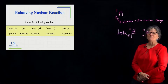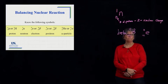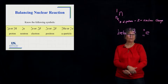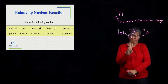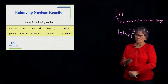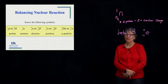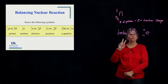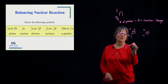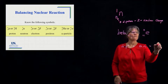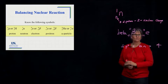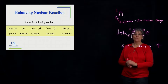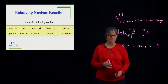The last particle we need to be familiar with is an alpha particle. An alpha particle is just a helium nucleus. Helium is element number two, so it has two protons — a nuclear charge of two. A helium nucleus also has two neutrons, so two protons plus two neutrons gives a mass number of four. It is equally correct to write an alpha particle with He or with the symbol alpha. Those are our nuclear particles.